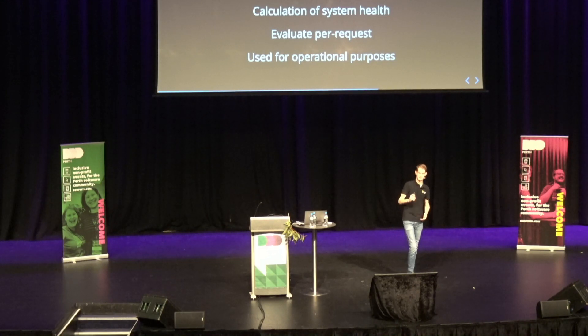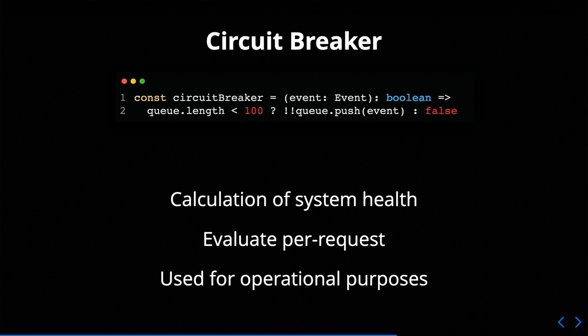Here's another type of feature toggle: a circuit breaker. Like a canary or calculated toggle uses a calculation of user attributes, a circuit breaker is slightly different — it's based on a calculation of your current system. You'd evaluate that per request, because your system health at startup is not the same as it'll be later on. In this example, we're checking queue depth: if our queue is getting too long and we've got too many things to process, we return false and back off — essentially stop adding new things to that queue. We can disable features if our system health isn't looking good. These are really useful for operational purposes.